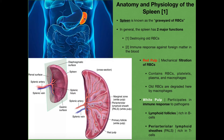The spleen is an organ found on the patient's left side, on the opposite side of the abdominal region from the liver. The liver is more on the patient's right side; the spleen is on the left. You can see that the spleen, in contrast to a lot of the other organs, is much smaller. If you're looking at a cat cadaver in an anatomy and physiology lab, the spleen is very thin in appearance — much smaller than most of the GI organs to the patient's right.